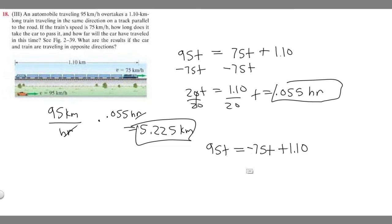Now we're adding instead of subtracting like last time. So plus 75t. If you add this up, it's 170t equals 1.10. If you divide, t equals 1.10 divided by 170. You get 0.00647 hours.